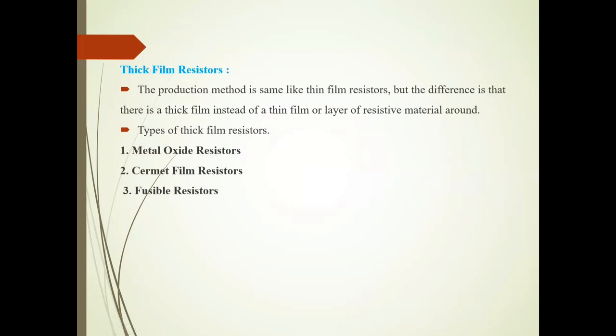Thick film resistors have the same production method as thin film resistors, but the difference is that there is a thick film instead of a thin film. Types of thick film resistors are metal oxide resistors, ceramic resistors, and fusible resistors.